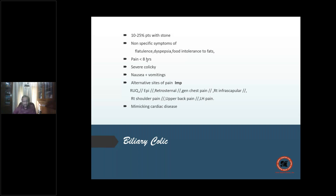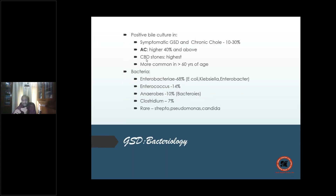The problem was OCG only detected 50 percent of stones, so many patients continued being treated as cardiac patients. Once ultrasound arrived with over 95 percent sensitivity, diagnosis of gallbladder stones became far more accurate. Regarding bacteriology of gallbladder stone disease: symptomatic gallbladder stone disease or chronic cholecystitis shows positive biliary culture in 10–30 percent; acute cholecystitis 50 percent; and CBD stones show the highest positivity — more common over 6 years of age.